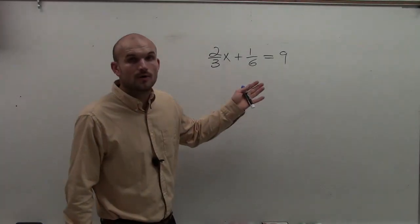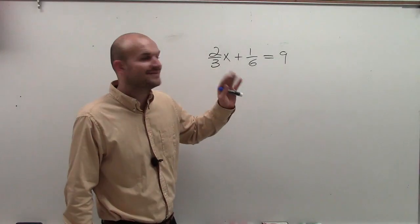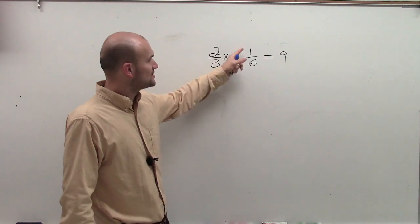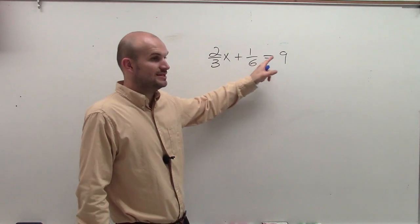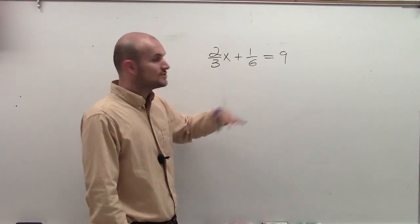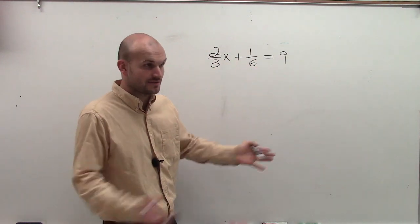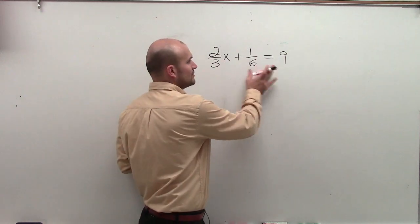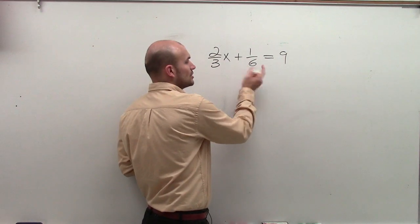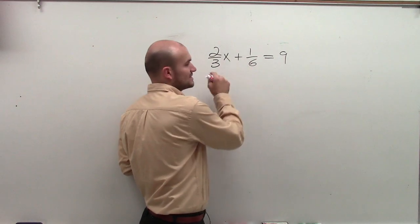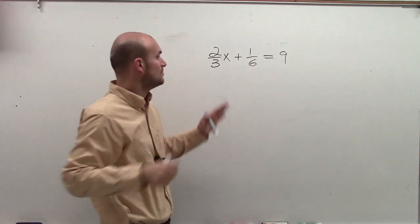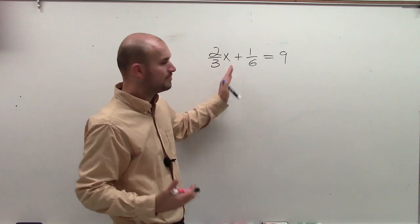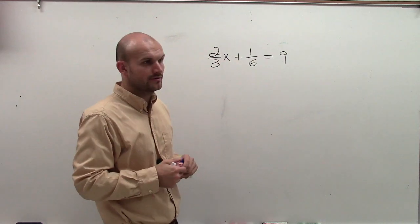Hello. For this one, we have 2/3x + 1/6 = 9. So again, let's look at the fractions. We want to get rid of them, right? So to get rid of the fraction denominators of 6 and 3, I'm going to have to multiply every term by what?